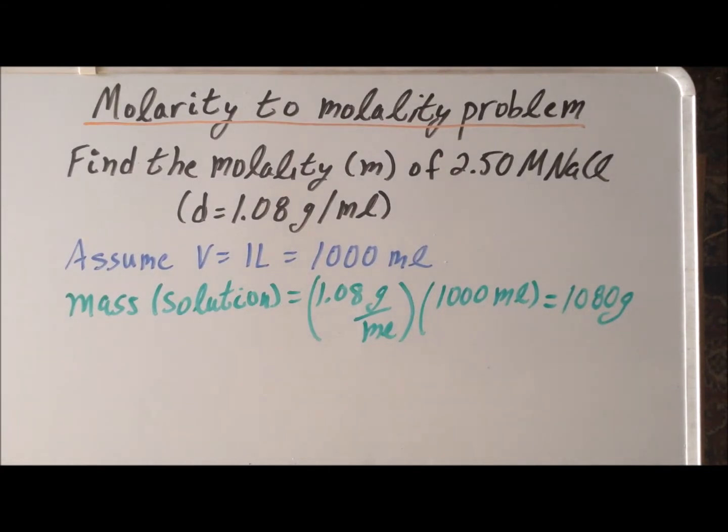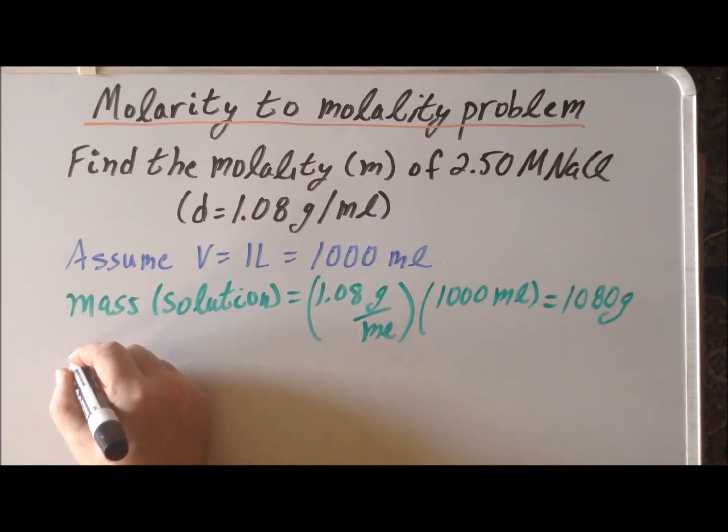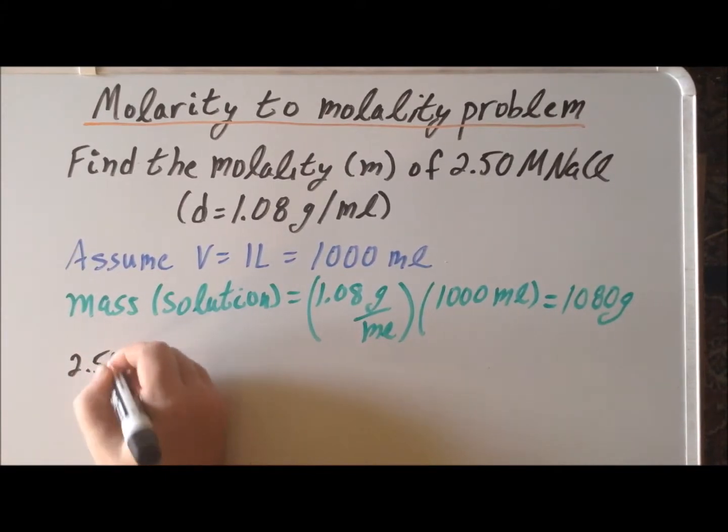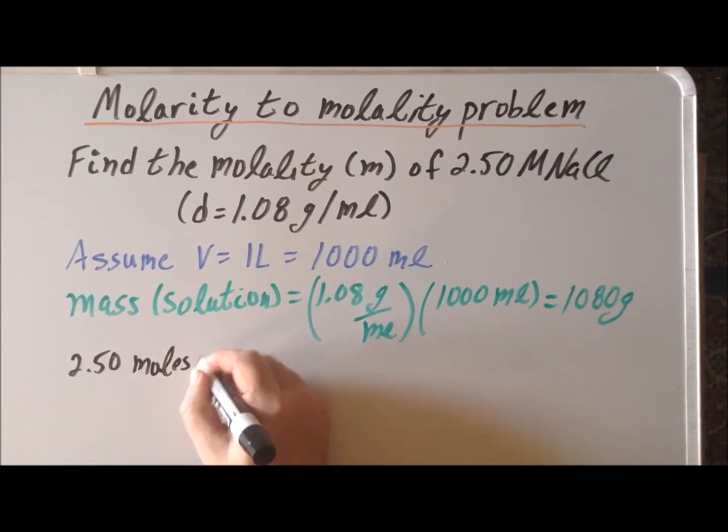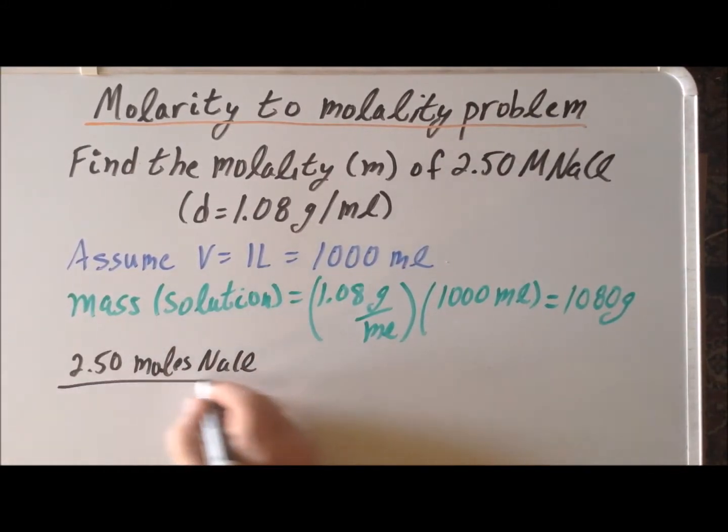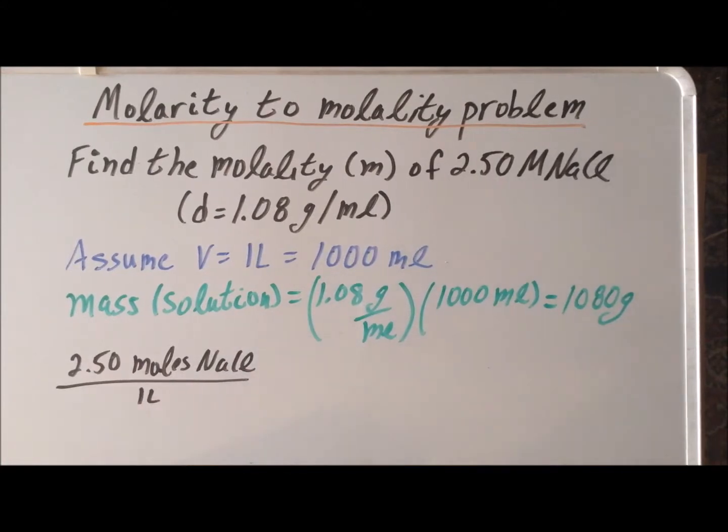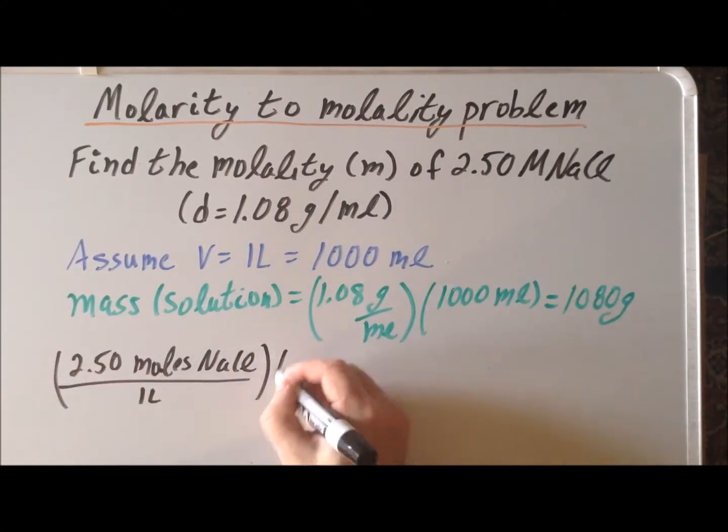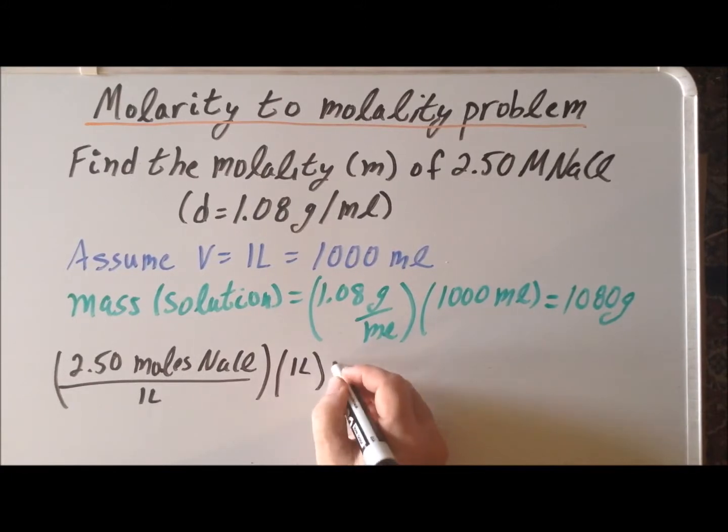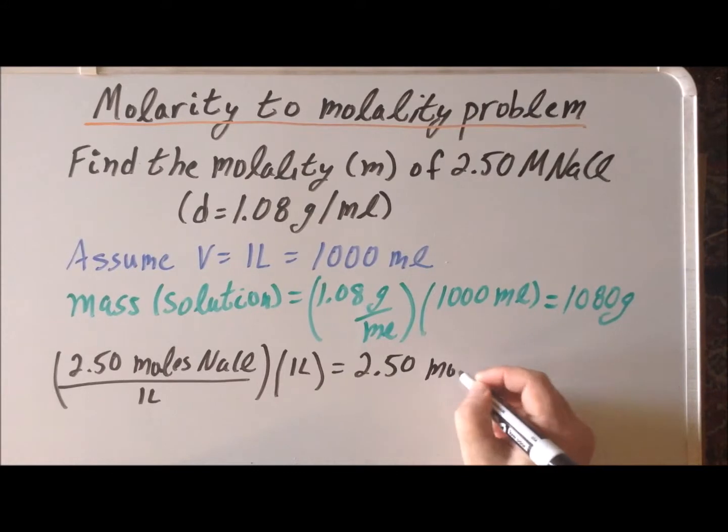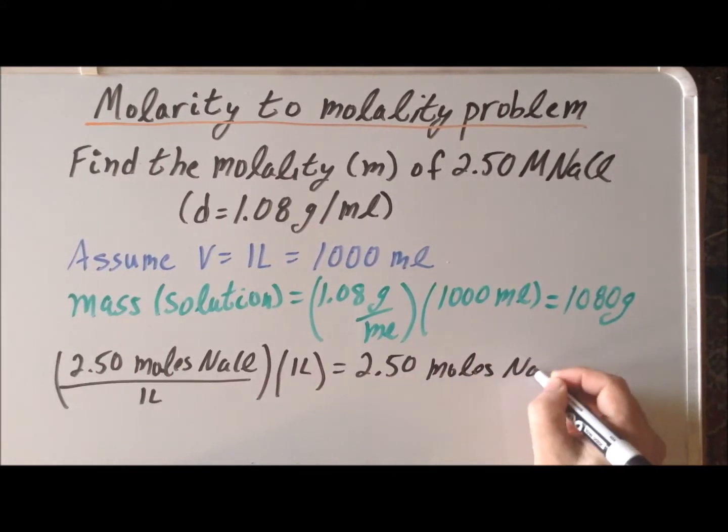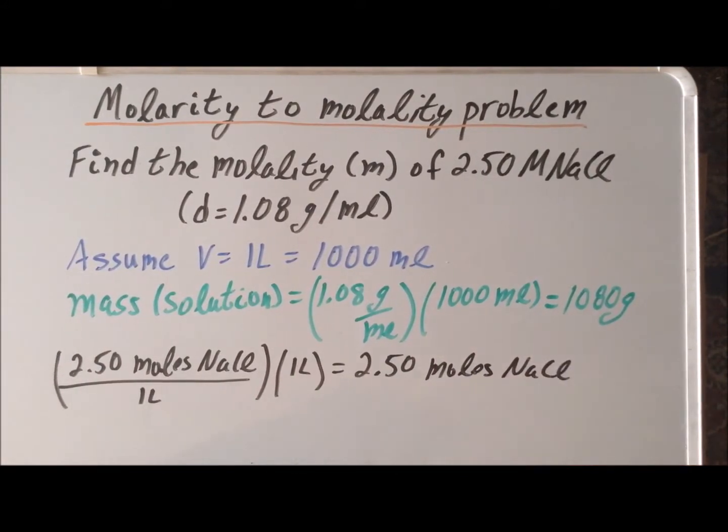Next, we want to determine how many moles of the solute we have in our solution. We know that we have a concentration of 2.50 molar, which means that we have 2.50 moles of sodium chloride (the solute) per liter of solution. And we have exactly one liter of solution, so that tells us that we have exactly 2.50 moles of sodium chloride in our solution.